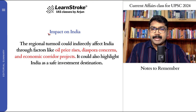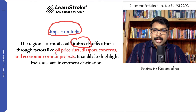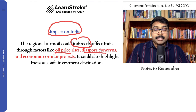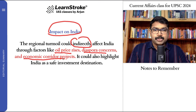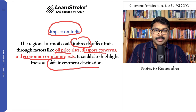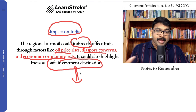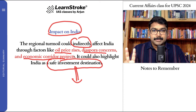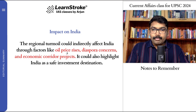India will have an indirect impact from this conflict: oil prices will rise, there are diaspora concerns especially for Indian people living in Israel, and economic corridor projects that have been planned can actually be slowed down. It could also position India as a safe investment destination when there is difficulty in these regions. But oil prices, diaspora concerns, and economic corridor projects will all be affected.